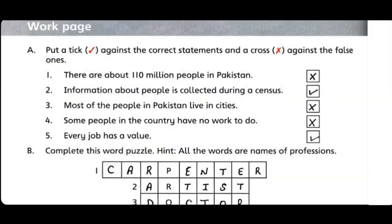یہاں پر آپ کا یہ chapter complete ہوا۔ Exercise A - put a tick against the correct statement and a cross against the false ones. Number 1: There are about 110 million people in Pakistan - wrong, cross لگائیں۔ Number 2: Information about people is collected during a census - correct, tick لگائیں۔ Number 3: Most of the people in Pakistan live in cities - wrong, cross لگائیں۔ Number 4: Some people in the country have no work to do - cross لگائیں۔ Number 5: Every job has a value - tick لگائیں۔